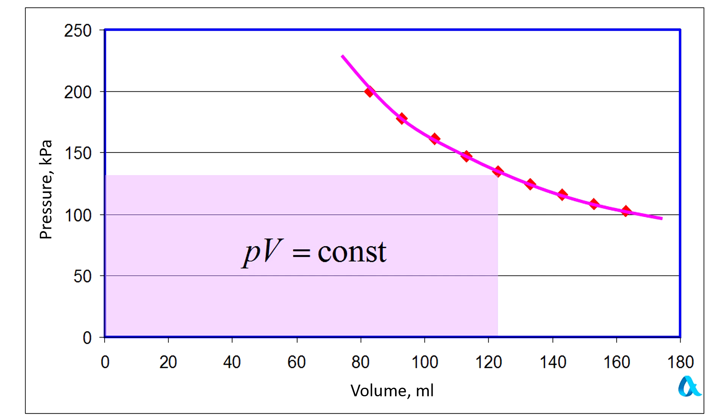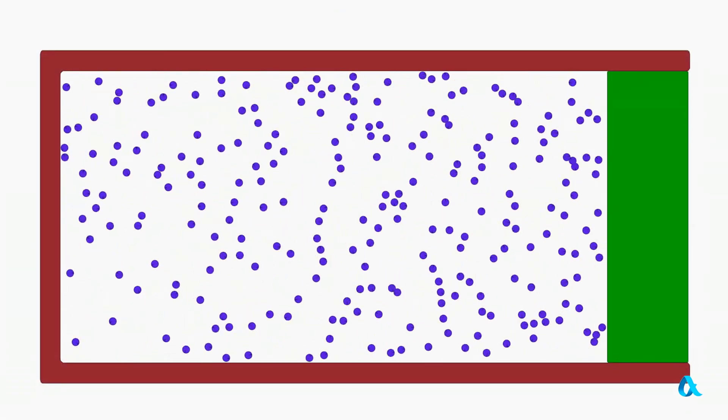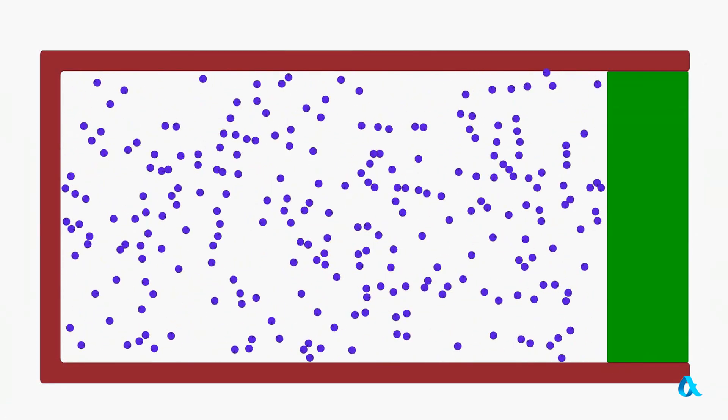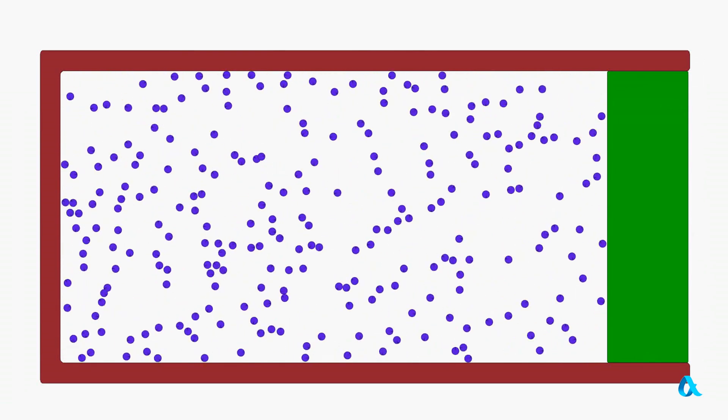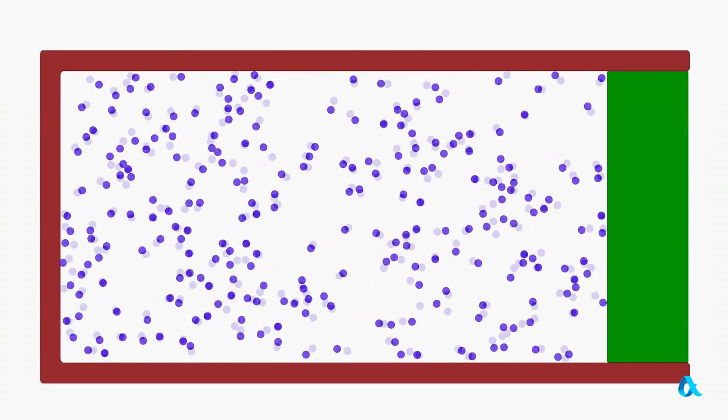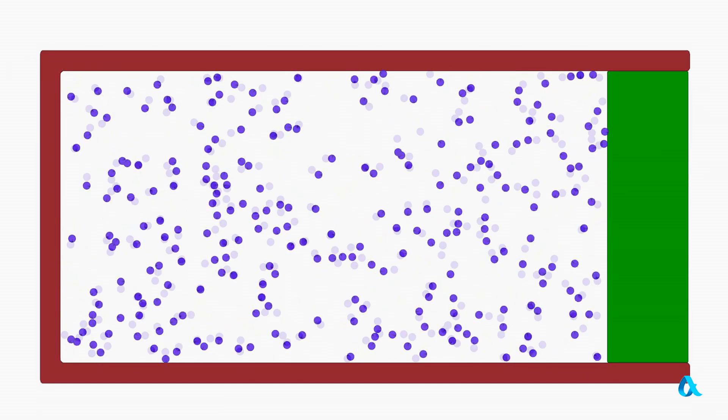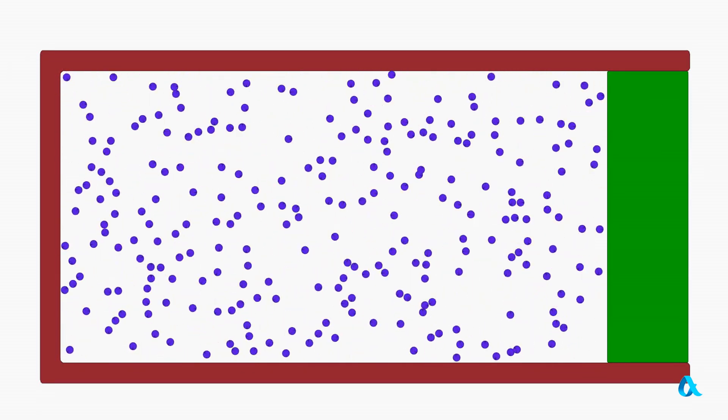The result may be explained on the basis of the molecular kinetic theory. Gas consists of a huge number of minute fast-moving molecules. Gas pressure appears due to the fact that molecules hit the vessel walls continuously and impart their momentum to them.